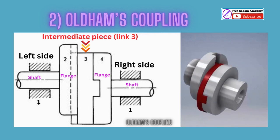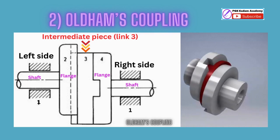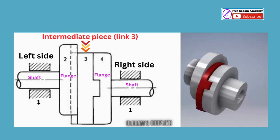Application of Oldham's coupling: This coupling is used to connect two shafts having some eccentricity in their shaft axes, i.e., an offset between them.